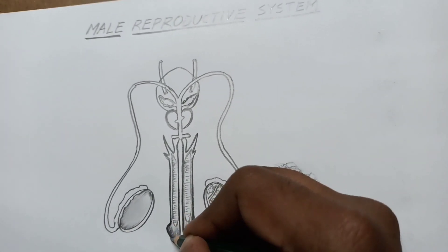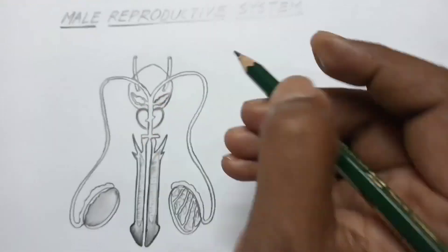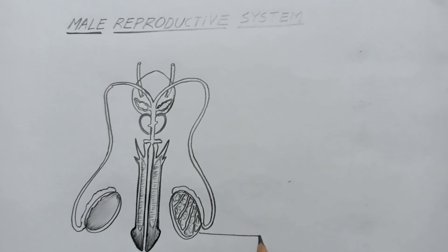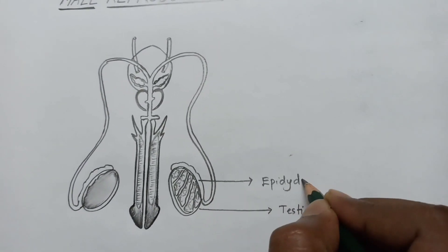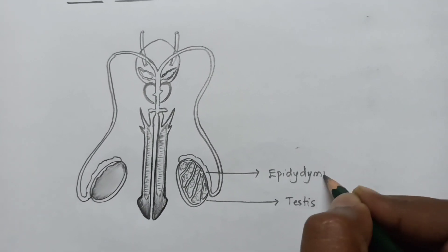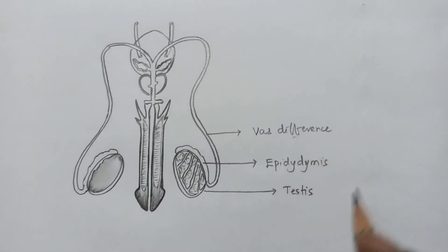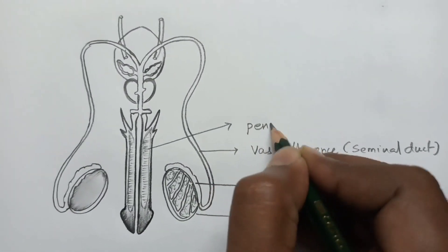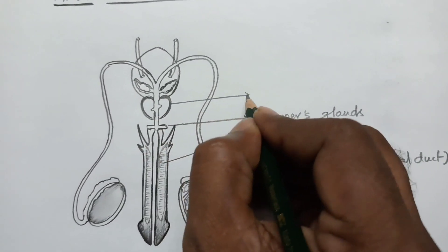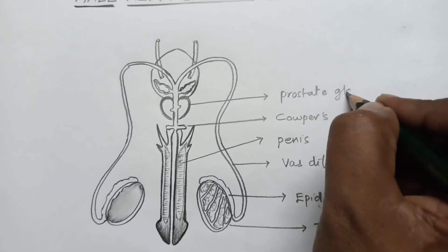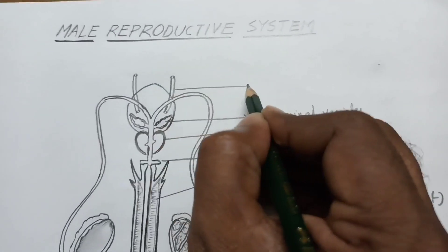Completed. Now it's time for labeling. These are the testes, this is the epididymis. Vas deferens, also known as seminal ducts. Penis, Cowper's glands, prostate gland. The pouch is called the scrotum. Seminal vesicles, ureters.